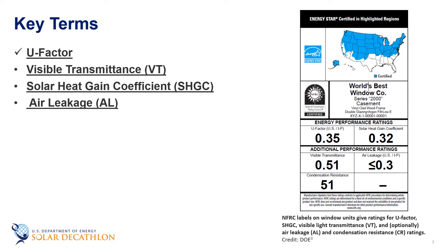We've already talked about the U-factor being the thermal transmittance. The lower the U-factor, the less heat transfer occurs through the window. This equates to heat that is lost in the wintertime or gained in the summertime. However, windows are much more complex than just thinking about the U-factor — they also transmit light.